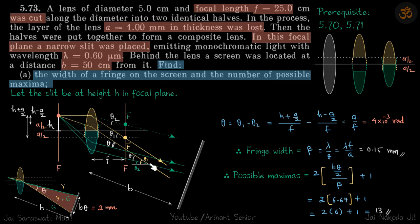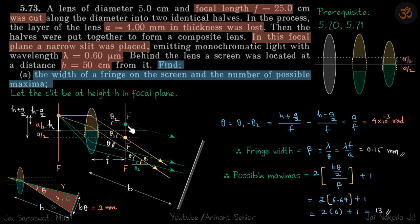We now have two sets of parallel rays emerging from this composite lens, which produce interference on the screen at distance b. From problem 5.70, the fringe width is given by lambda divided by the angle between the two sets of rays. The angle theta between the yellow ray and the green ray equals theta1 minus theta2, where theta1 and theta2 are the angles each set makes with the horizontal.